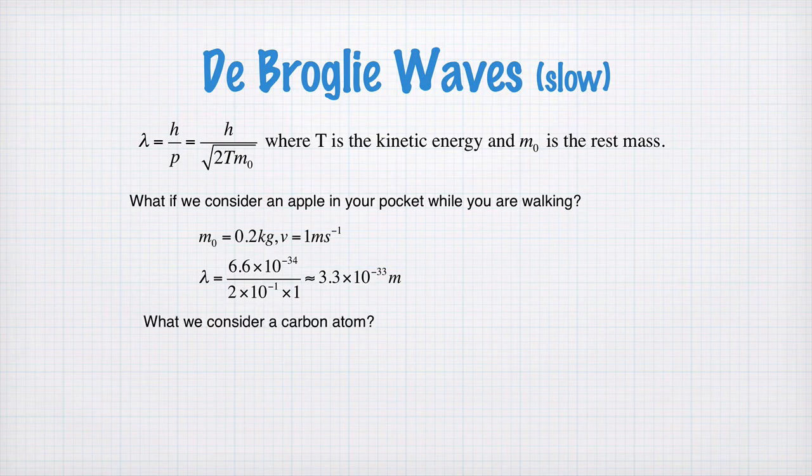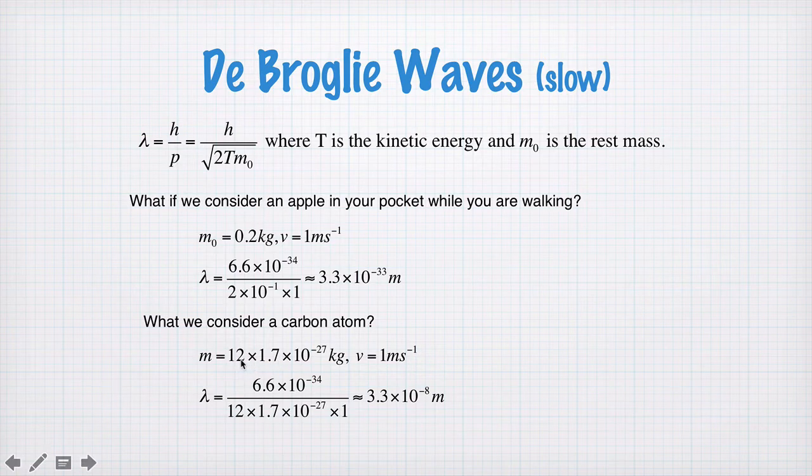What about a single carbon atom? Well, the mass of a single carbon atom is about 12, which is the number of nucleons, times the atomic mass unit, 1.7 by 10 to the minus 27 kilograms. Same velocity if it's a carbon atom in your pocket as you're walking. So here's the wavelength.